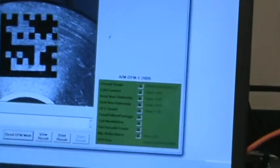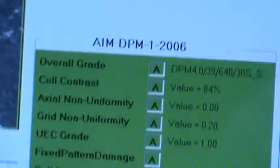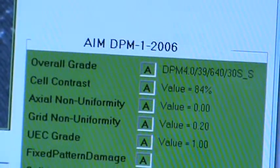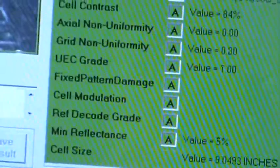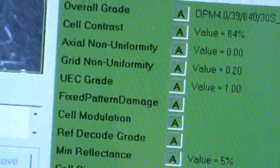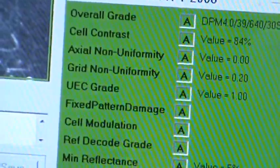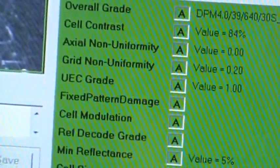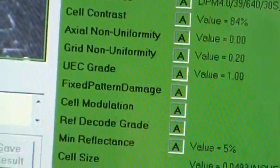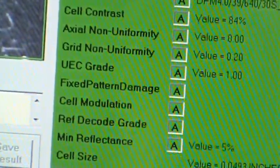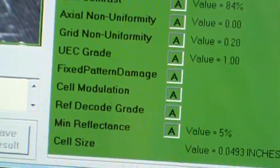So there's our mark, and we'll zoom in on the grades itself, and you can see in all the values it passed starting with cell overall grades in A, cell contrast A, axial non-uniformity, grid non-uniformity, ECC, fixed pattern damage, cell modulation, reference decode, and minimum reflectance.